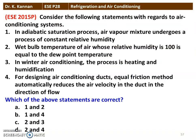The first question from the 2015 question paper: Consider the following statements with regards to an air conditioning system. In an adiabatic saturation process, the air-vapor mixture undergoes a process of constant relative humidity. In winter air conditioning, the process is heating and humidification. For designing an air conditioning duct, the equal friction method automatically reduces the air velocity in the duct in the direction of flow.